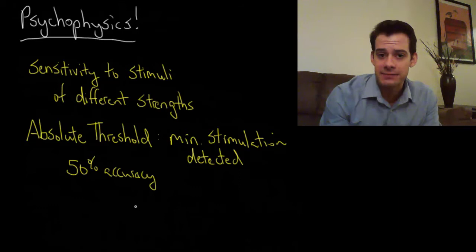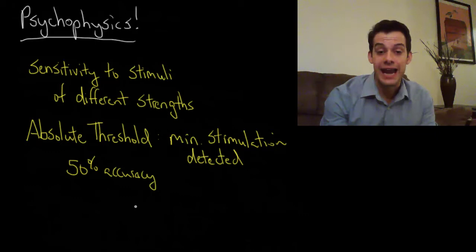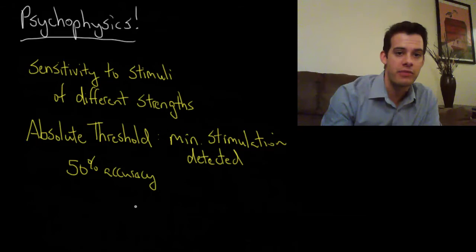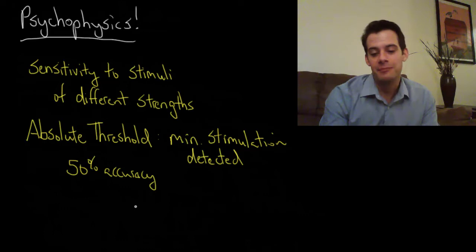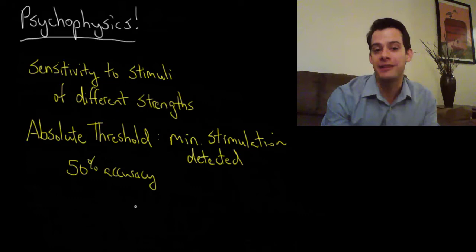So you can see some estimates for absolute thresholds. But remember, these are just estimates and they're usually based on supposed ideal conditions. So you might see that the human eye can see the light of a candle from 30 miles. And hypothetically that might be true, but in real life conditions, get your friend to go 30 miles away and light a candle and you probably aren't going to be able to see it. But of course, that's because you're in the real world and there's all sorts of other noise. And that's something that I'll talk about in the next video.